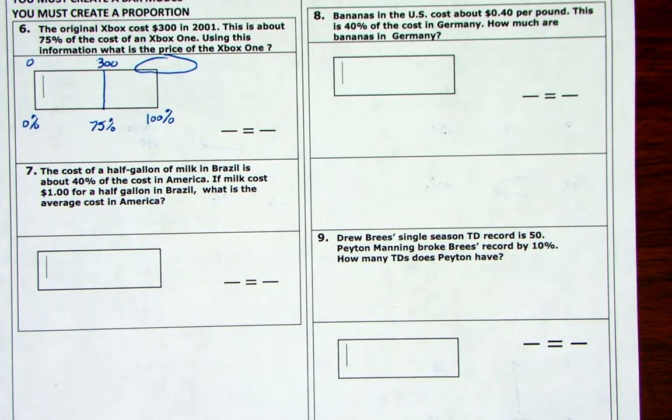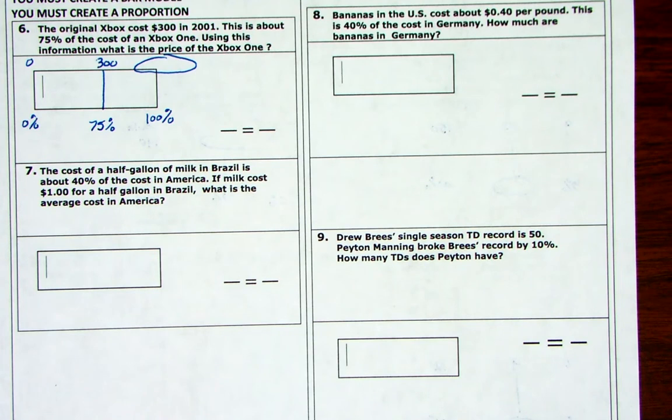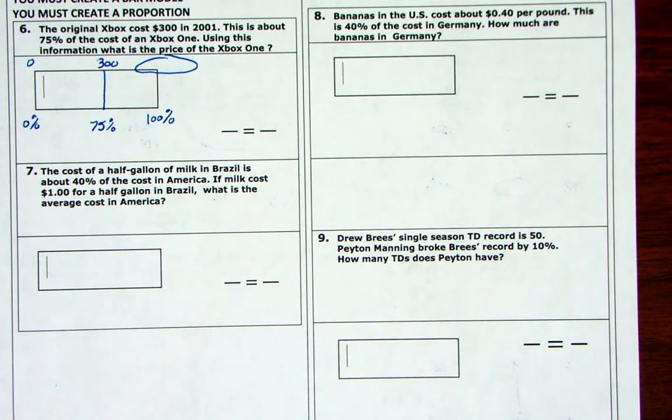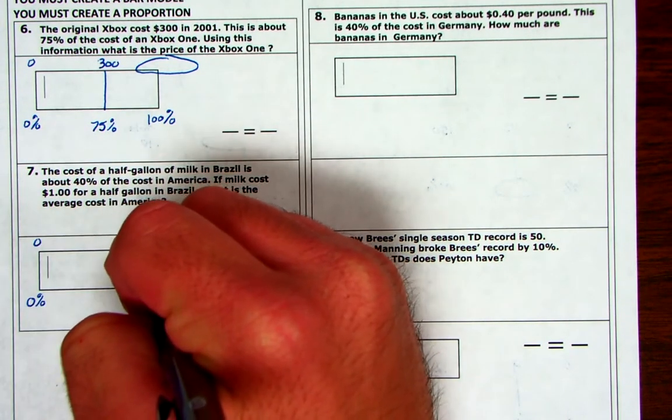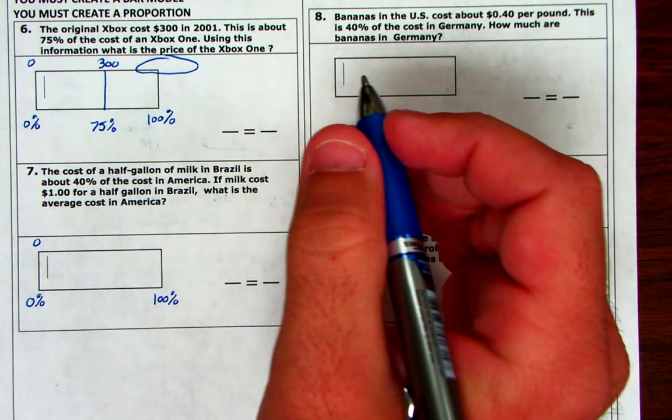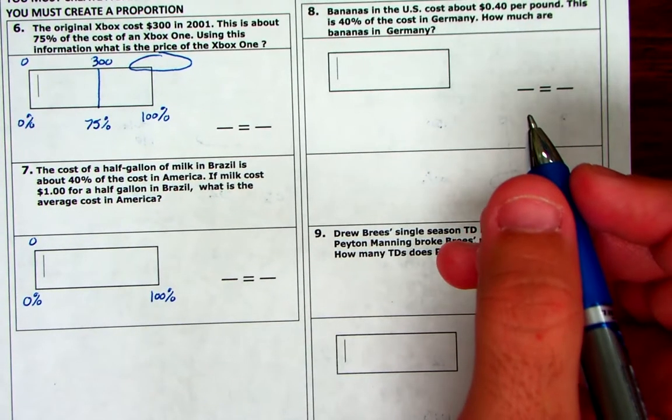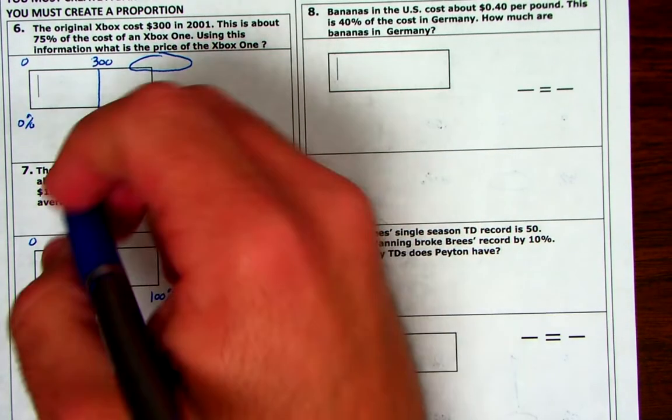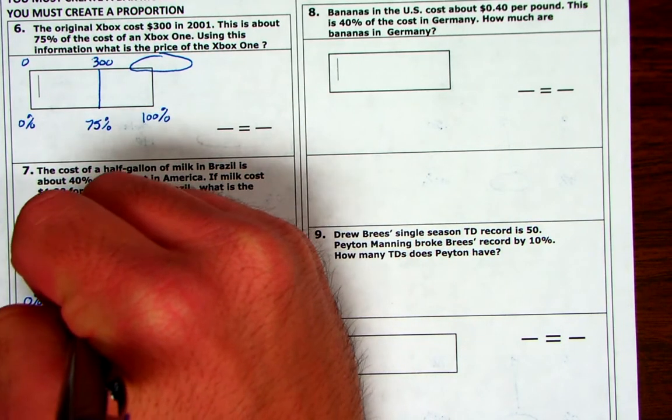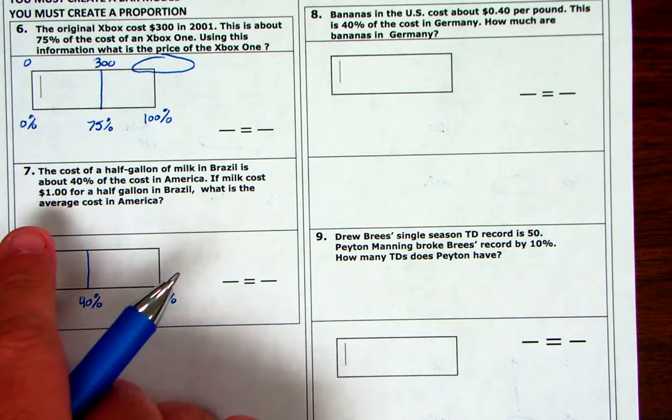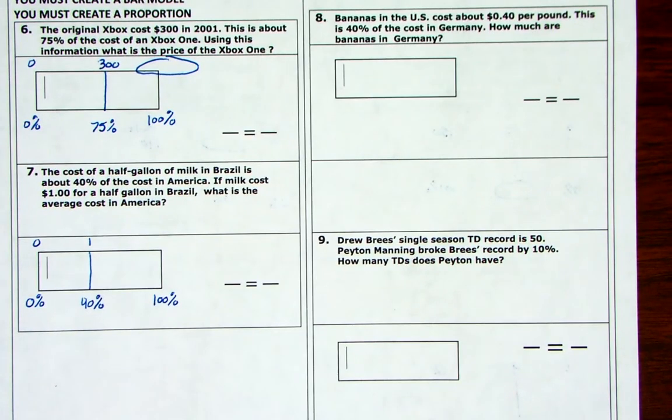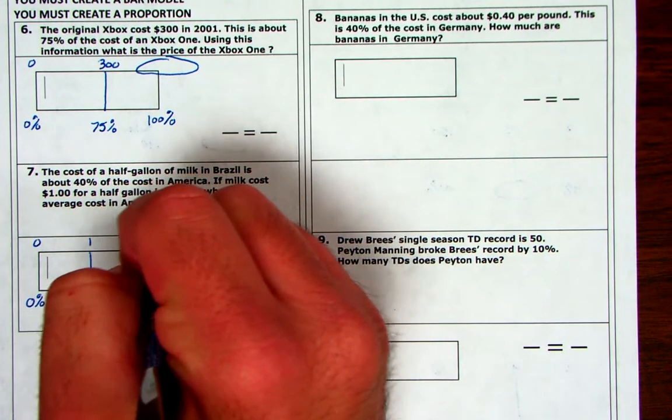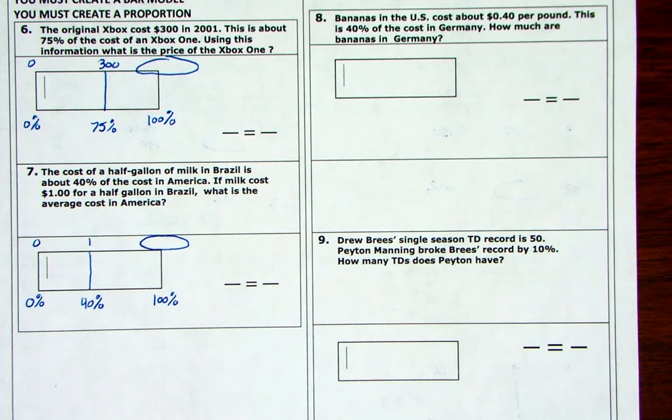The cost of a half gallon of milk in Brazil is about 40% of the cost in America. If milk costs $1 for half a gallon in Brazil, what is the average cost in America? So again, look at the information it gives you. It gives you a percent. What percent does it give you? It gives you 40%. And that 40% represents how much? It represents $1. So I'm just going to put a one here. It says, what is the average cost of America? So that's what we're trying to figure out. What is the cost of the milk for America?